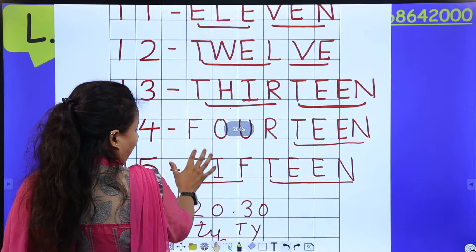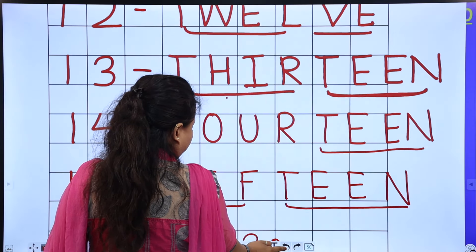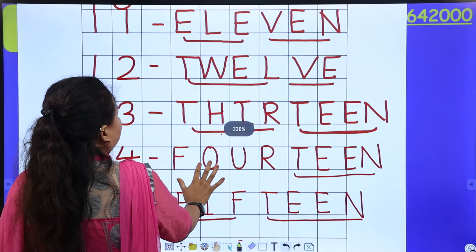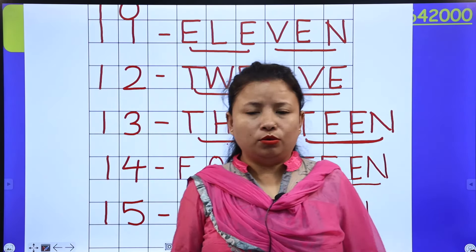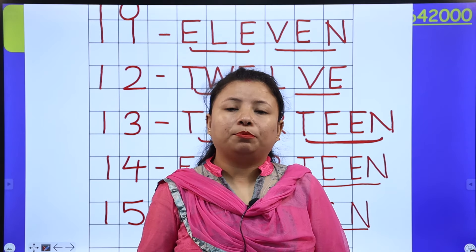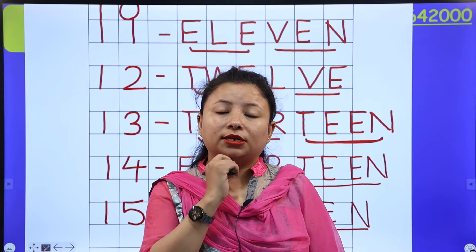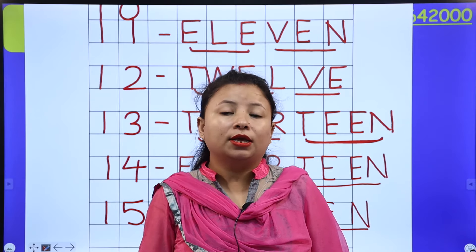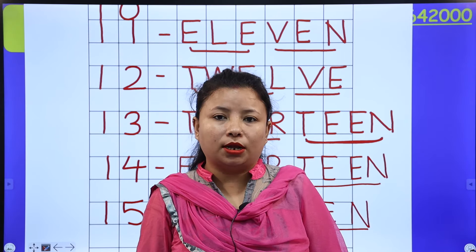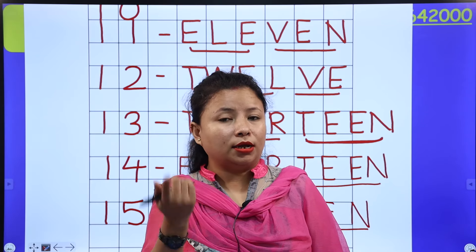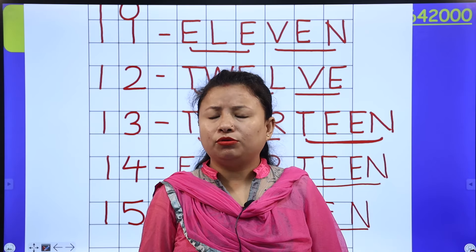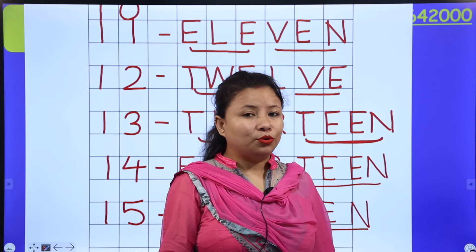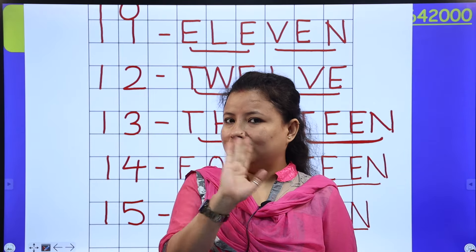So now it's homework time. You need to copy this work into your fair notebook, and not only write it — you also need to learn it. As you write, read it aloud too, like: how to spell 11 — E-L-E-V-E-N. Ma'am is leaving now, but will come back and we will proceed with the next work. Next class, ma'am will teach you number names 16 to 20. So see you later!